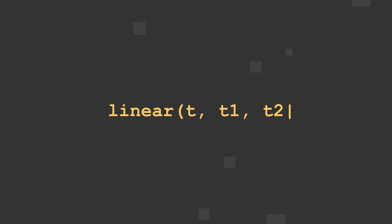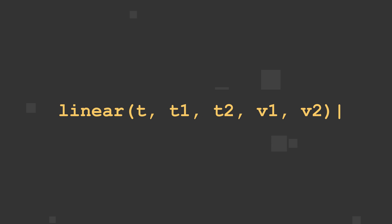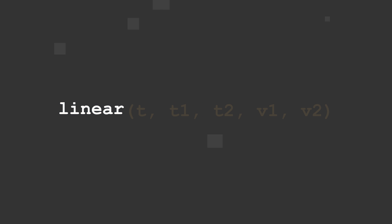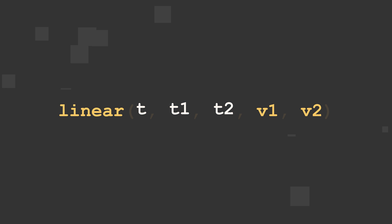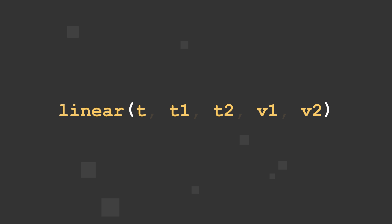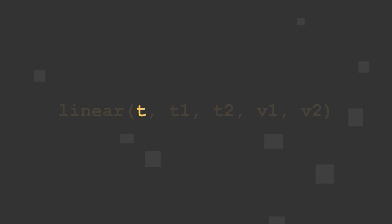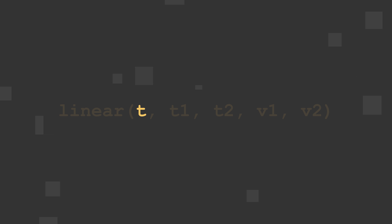The Linear Method is a tool for converting value ranges. It starts with the word linear and includes 3 to 5 arguments wrapped in parentheses and separated by commas. The first argument is always a custom input source, which can be time, value, or another property reference.